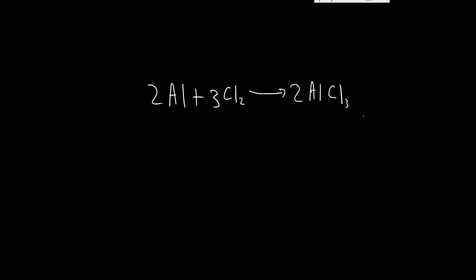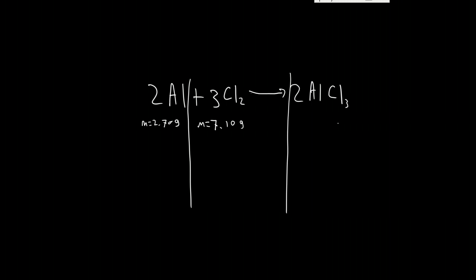In this question we're given 2.70 grams of aluminum, so m equals 2.70 grams. And we're given 7.10 grams of chlorine. And we want to know the maximum mass of this one, maximum mass that we will produce from this. It's limiting, so how much is the maximum mass that we can get if this proceeds all the way.